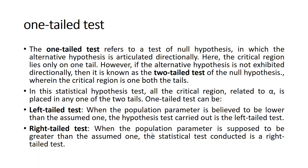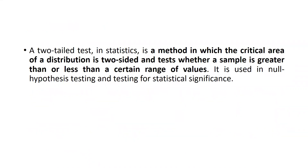A one-tail test can be either a left-tailed test or a right-tailed test. A left-tailed test is used when the population parameter is believed to be lower than the assumed value. A right-tailed test is used when the population parameter is supposed to be greater than the assumed value.